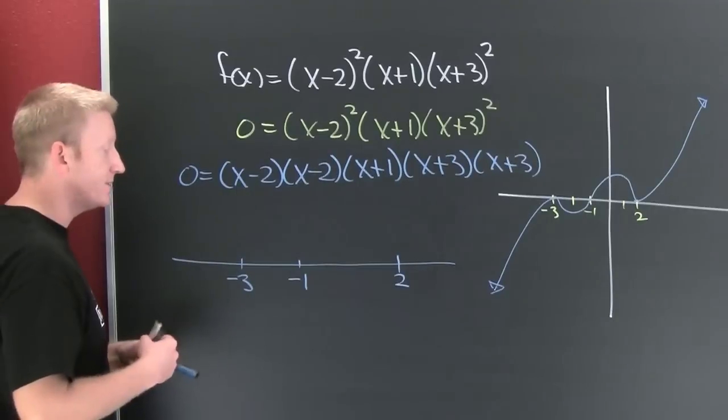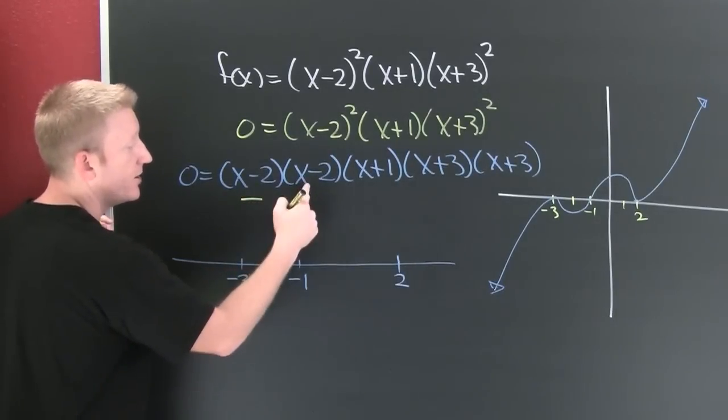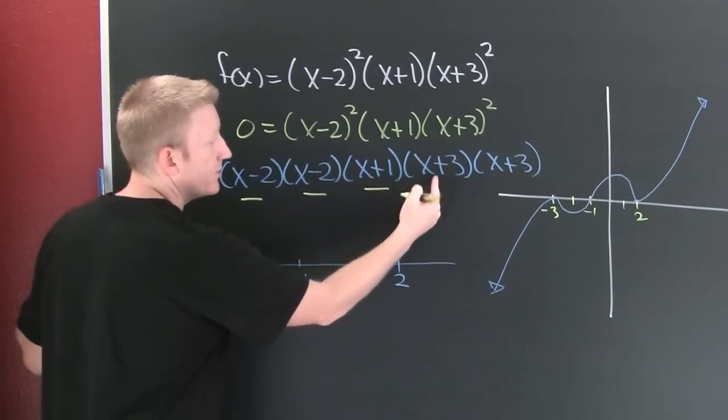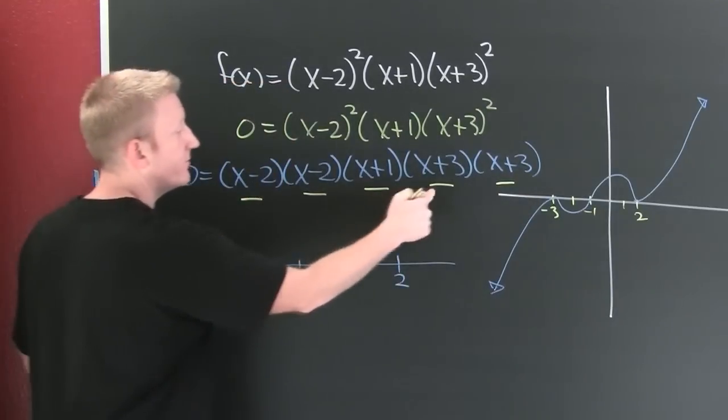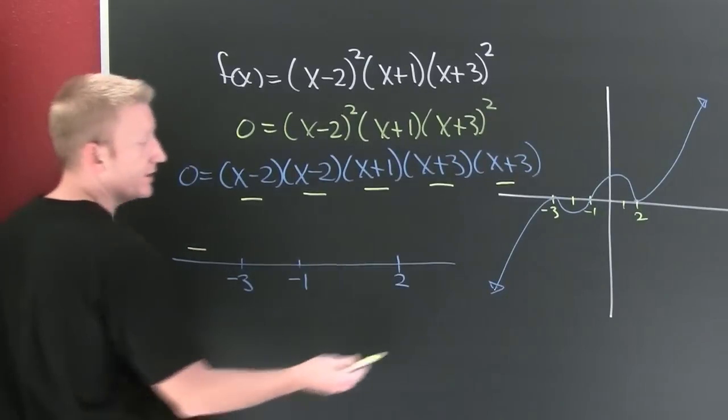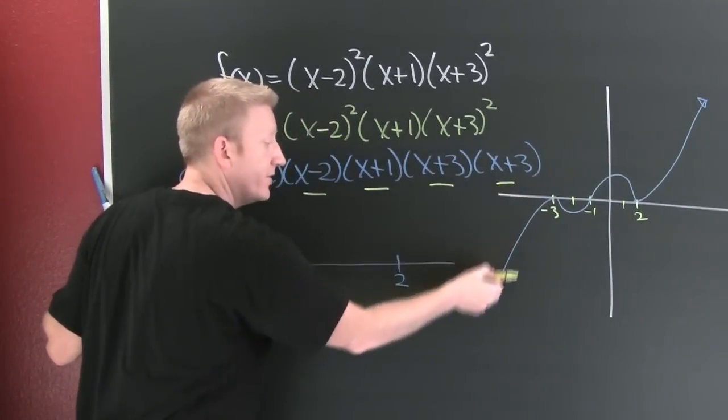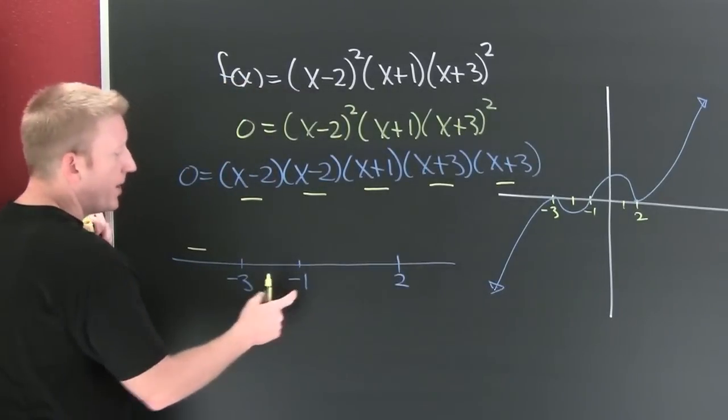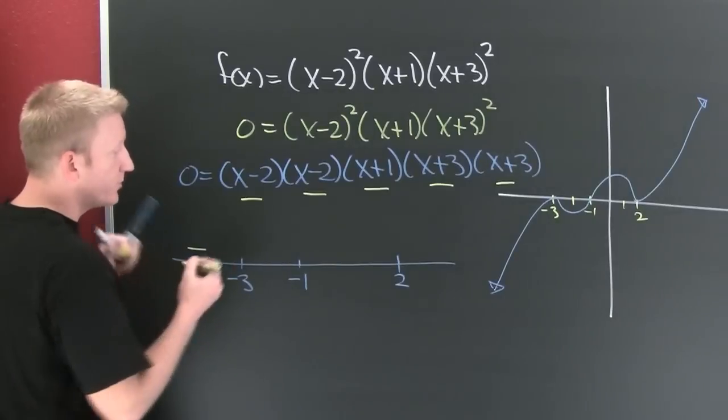To the left of -3, I have -10. -10 makes this negative, makes this negative, makes it negative, makes it negative, makes it negative. That's 1, 2, 3, 4, 5 negatives. So it's going to be negative over here, indicated by our graph so that to the left of -3, our function is below the line.